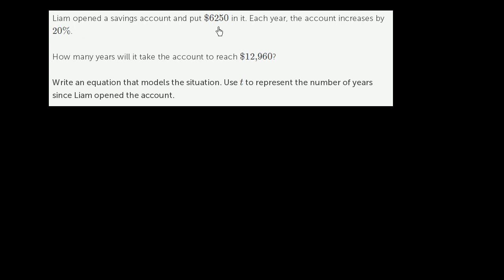Liam opened a savings account and put $6,250 in it. Each year, the account increases by 20%. How many years will it take the account to reach $12,960? Write an equation that models the situation. Use t to represent the number of years since Liam opened the account.